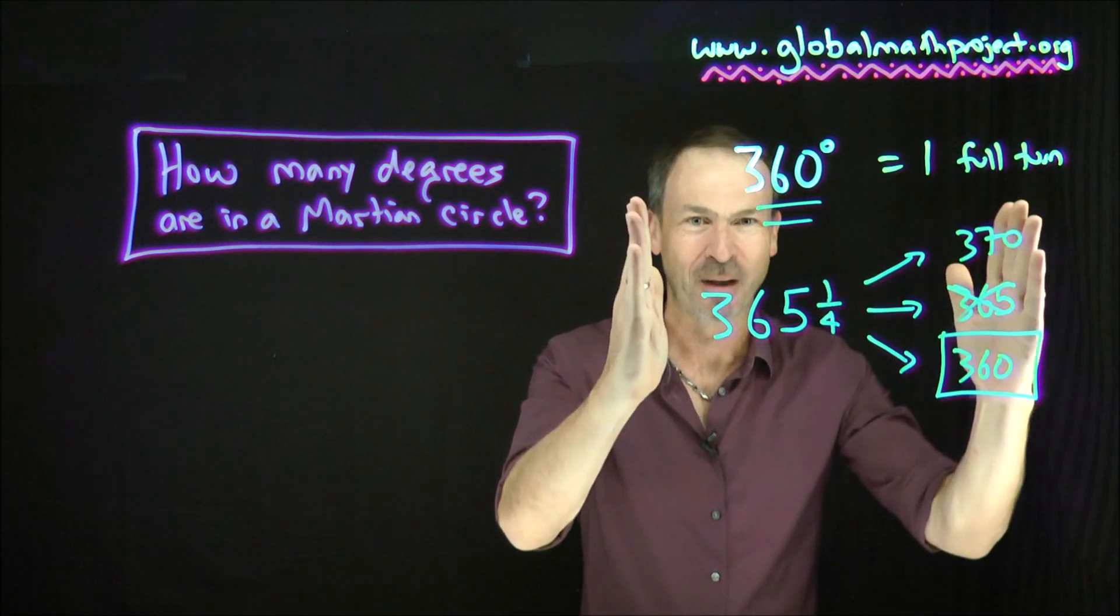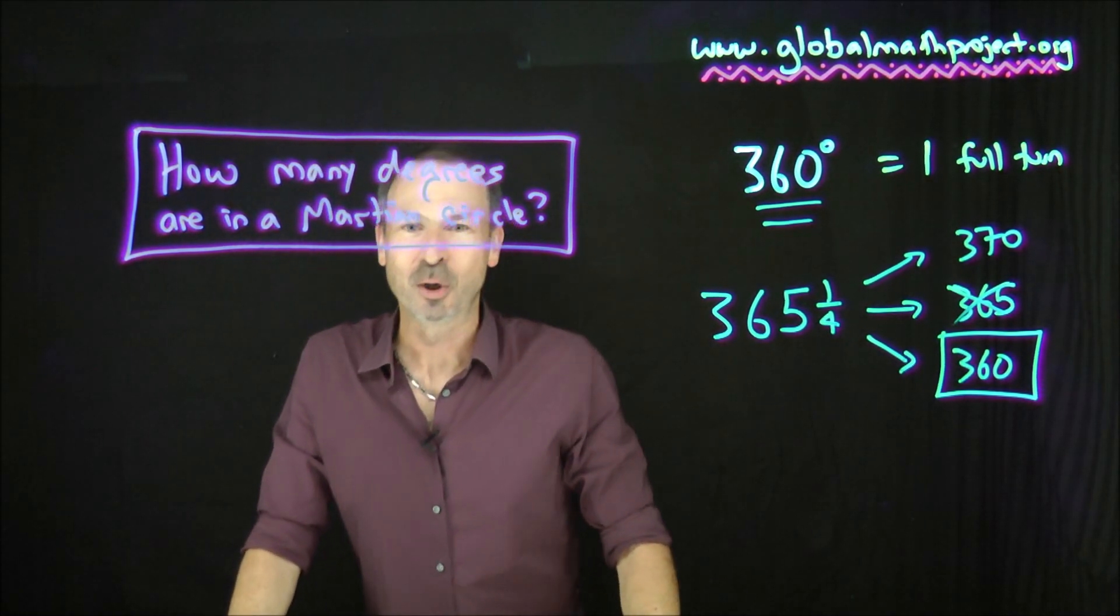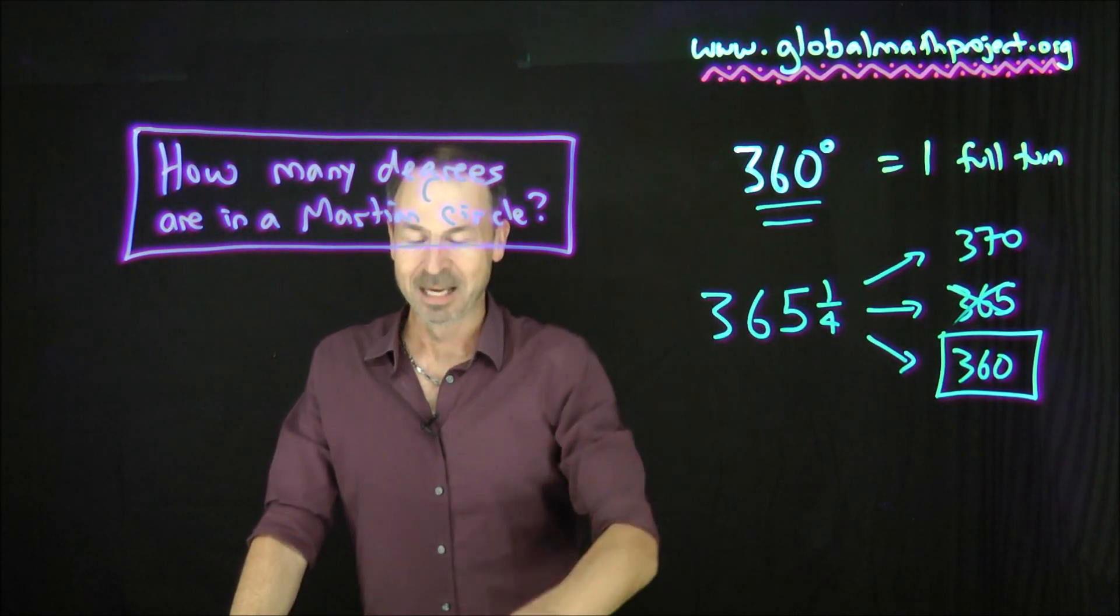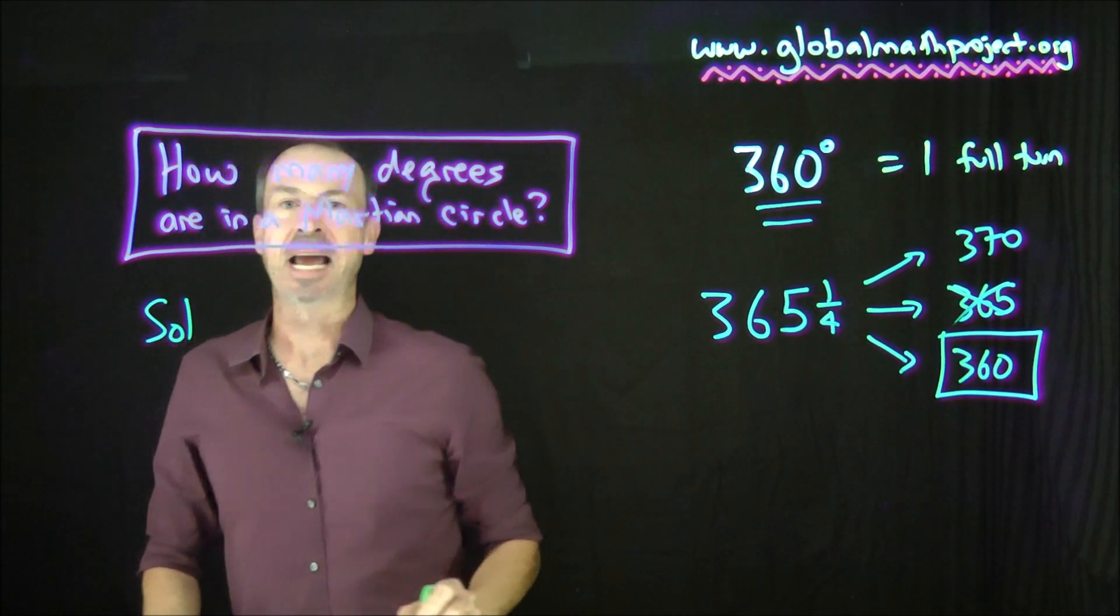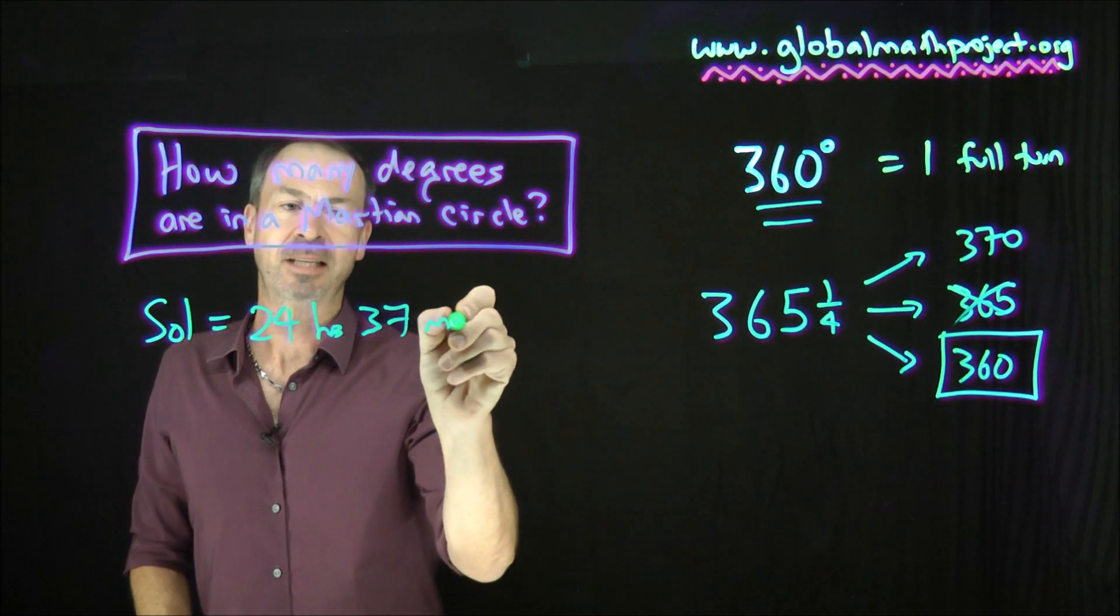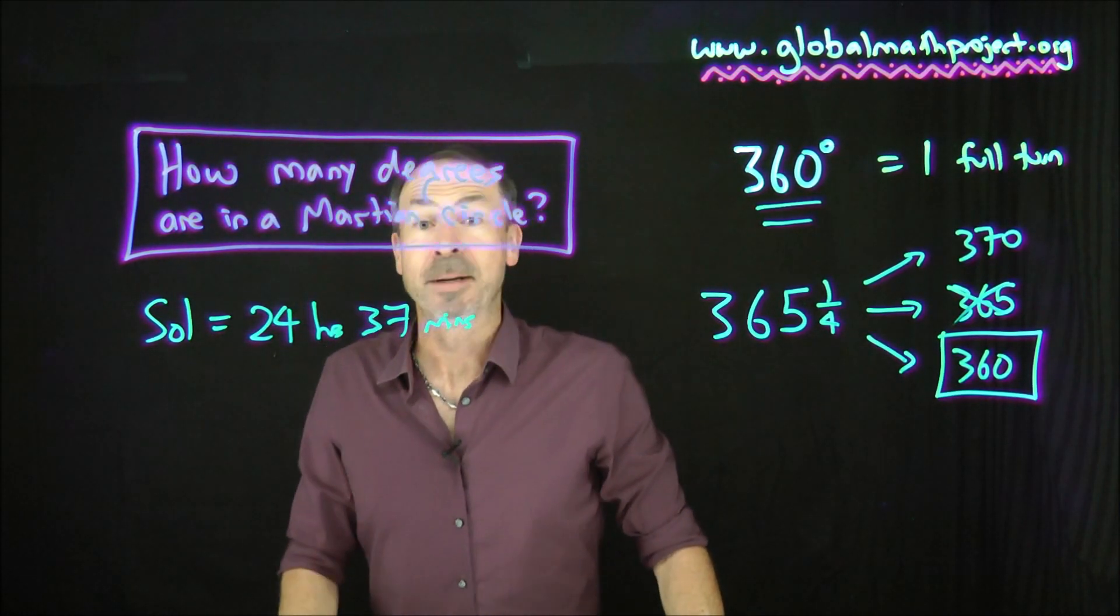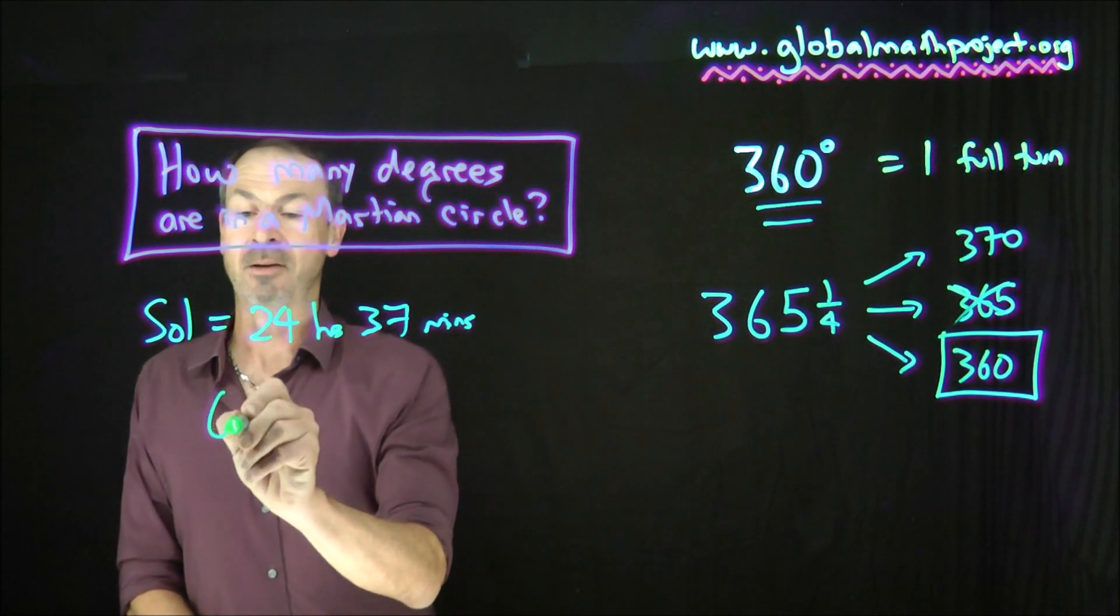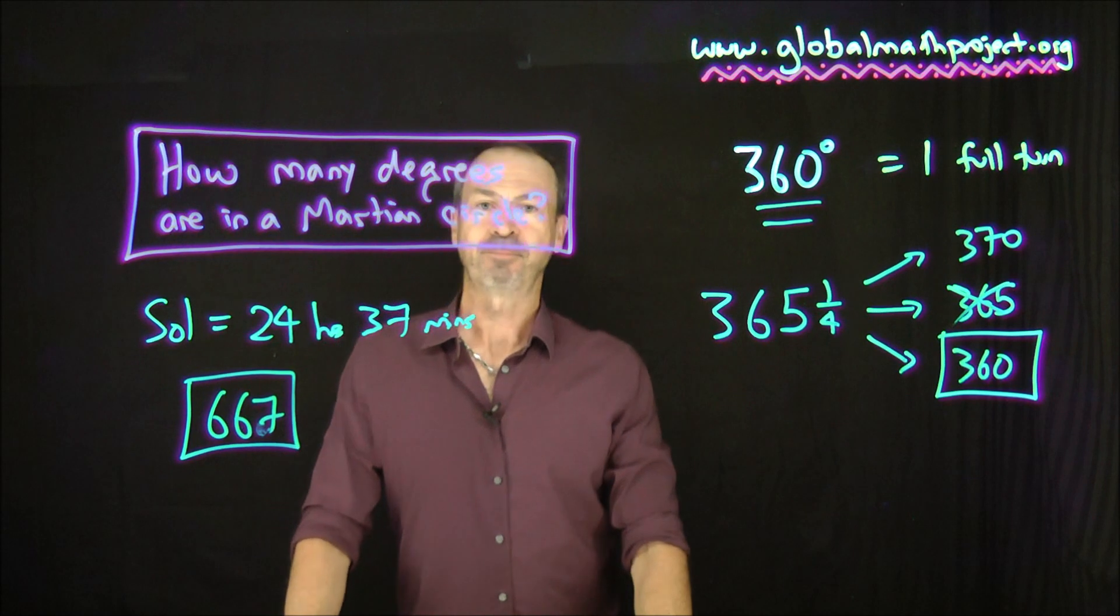Alright, so now back to the original question. We've answered the Earthling version. Let's go to the Martian version. What would the Martians do? What do we need to know about the Martian experience to be able to answer this question here? Well, this is based on the number of days in a year. So we need to know the number of days in a Martian year. Now, we Earthlings call a day, a Martian day, a sol. And it turns out on Mars, one sol lasts 24 hours and 37 minutes. So it's slightly longer than us. So they have slightly longer days than we do. But the real question is, how many sols are in a Martian year? How many days in a year does a Martian experience? And if you look it up, it turns out there are 667 sols in a Martian year.